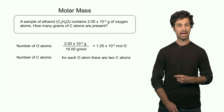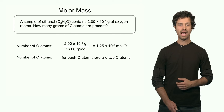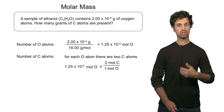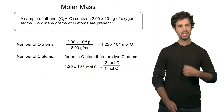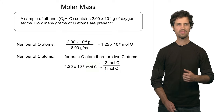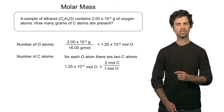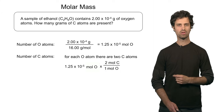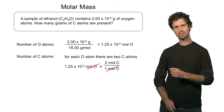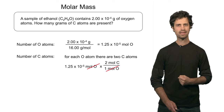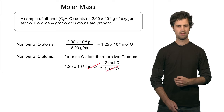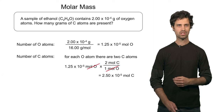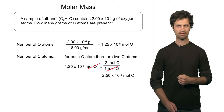Knowing how many moles of oxygen I have, I can determine how many moles of carbon I have. For each oxygen atom there are 2 carbon atoms, because the molecular formula of ethanol gives 1 oxygen for every 2 carbons. So I take 1.25 times 10 to the minus 5 moles of oxygen and multiply by the unit factor of 2 moles of carbon per 1 mole of oxygen. The unit of moles of oxygen cancels, giving 2.5 times 10 to the minus 5 moles of carbon.